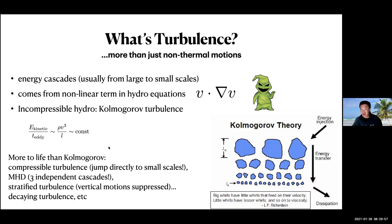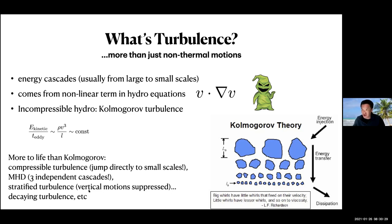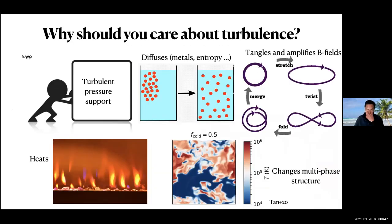But there is more to life than Kolmogorov. Instead of a standard cascade, if you push on something — especially with a shock — you can directly transfer power from large to small scales, what people sometimes call Burgers turbulence. If you have a magnetic field, that changes the character of turbulence — there are then three independent cascades. If you have stratified turbulence in a gravitational field, vertical motions are suppressed by buoyancy, and the turbulence becomes anisotropic. There's also decaying turbulence.